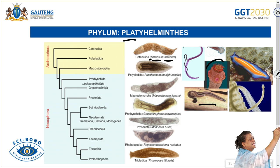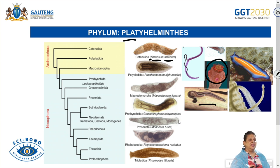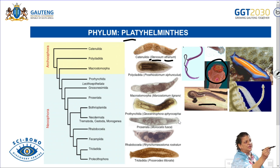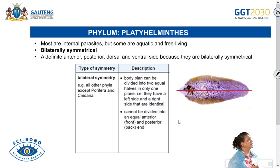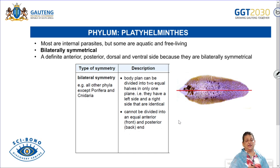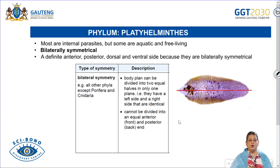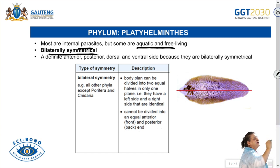An example of a Platyhelminth is the tapeworm, which hooks into the intestine of pigs or humans. If someone eats uncooked pork infested with tapeworms, the tapeworms transfer into the human body. The tapeworm has a very flat, ribbon-like body so it can stay in the human body for a long time. Most Platyhelminthes are internal parasites — they live within an organism and harm it. Some are aquatic and free-living, but most are internal parasites.